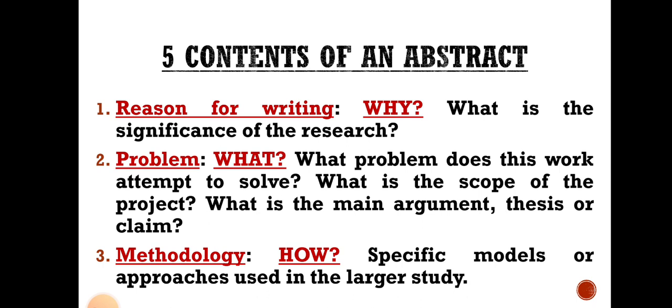Next comes methodology — it defines the 'how' of the research. It describes the specific models or approaches used in the larger study. We tell which research methodology we are going to apply. When we come to simple methodologies in social sciences or humanities, that is qualitative and quantitative analysis. So we mention here which methodology we are going to use.